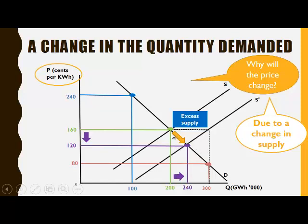So the change in the price was due to a change in supply, and that resulted in a movement along the demand curve to a new equilibrium quantity demanded.